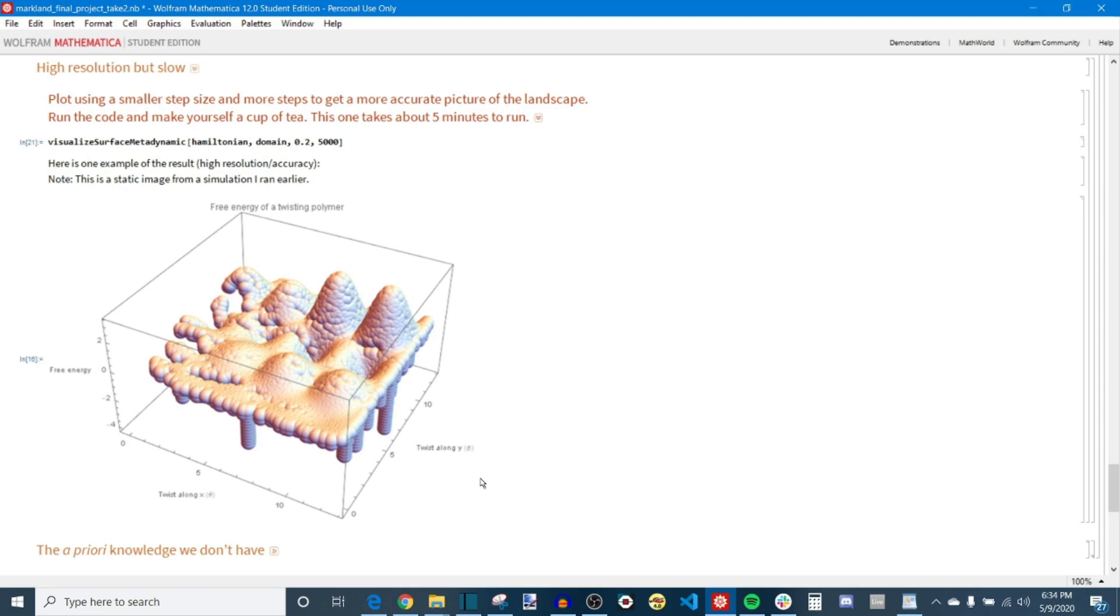In my case, the system that I use is a polymer which can twist in two different directions, so the X direction or a Y direction, and we can plot energy as a function of these two variables.